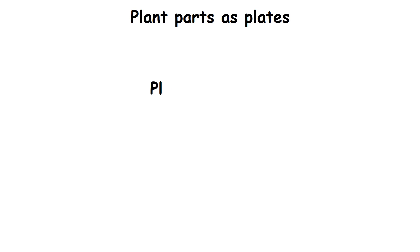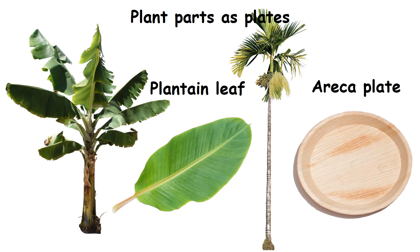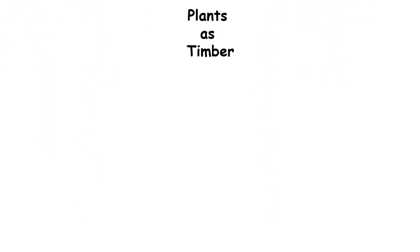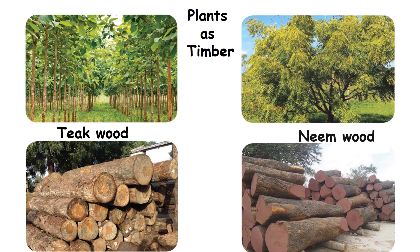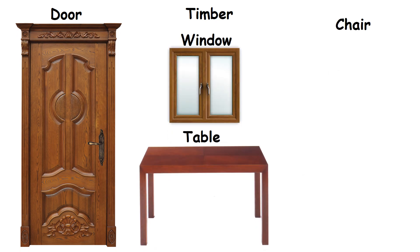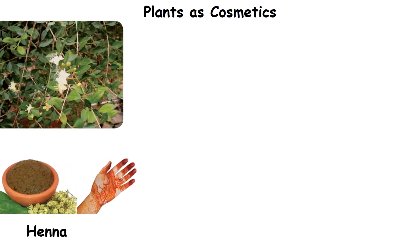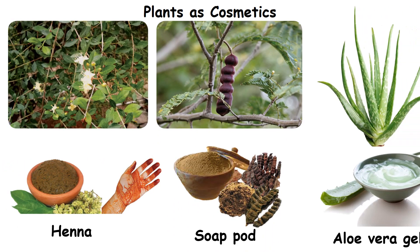We can use plant parts as plates for eating. Examples: henna, soap pod and aloe vera gel.